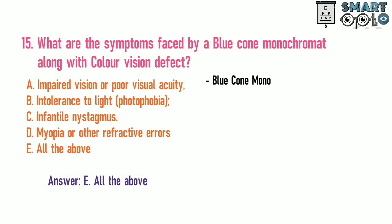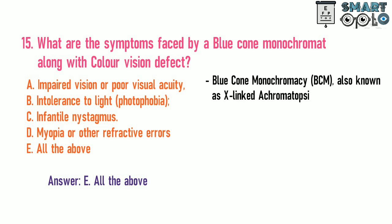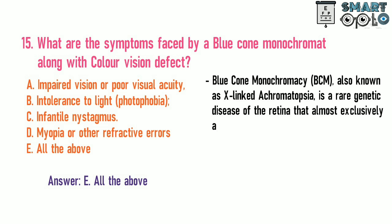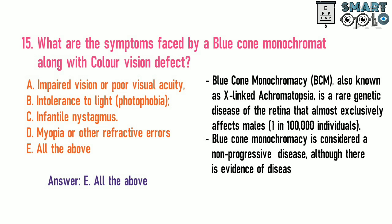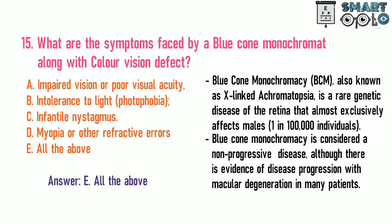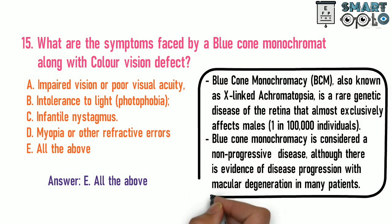Blue cone monochromacy (BCM), also known as X-linked achromatopsia, is a rare genetic disease of the retina that almost exclusively affects males, 1 in 1 lakh individuals. It is considered a non-progressive disease, although there is evidence of disease progression with macular degeneration in many patients.